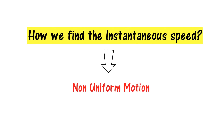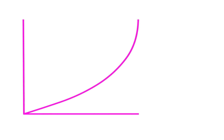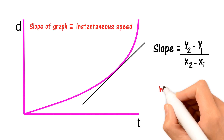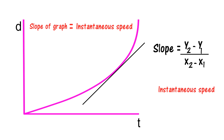To find instantaneous speed in non-uniform motion, we draw a graph. Taking distance along the Y-axis and time along the X-axis, we plot the graph for the motion of a body. The slope of this graph gives the instantaneous speed of the body, calculated as Y2 minus Y1 over X2 minus X1.